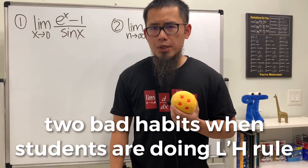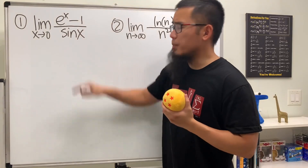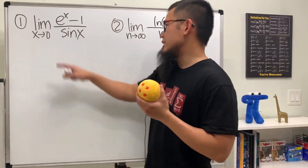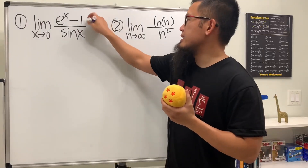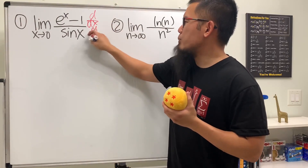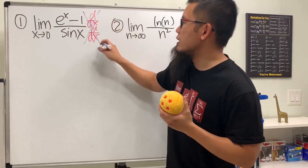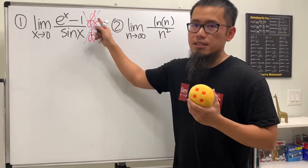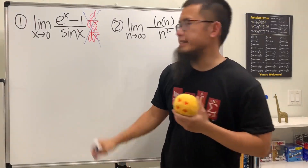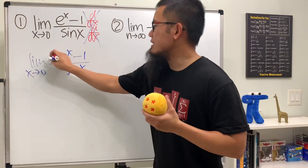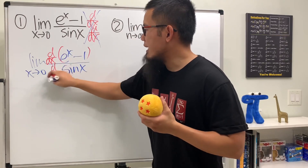A common habit when students are doing L'Hôpital's rule for the first time is that they differentiate the top and differentiate the bottom, but unfortunately they do not have any space in the front, so they just put the d/dx at the end. I appreciate that they are trying to show work, but seriously, don't do this — this notation is meant to be in front of the expression you are differentiating. Go ahead and write it again, put the d/dx in the front, and use parentheses like so.